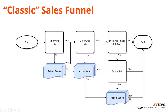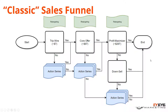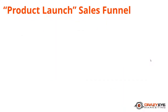If they buy the tripwire, we present our core offer at $97. If they don't buy it, another action series tries to sell that core offer. If they buy it, we show them our profit maximizer; if not, we present a downsell. If they don't buy the downsell, we place them in an action series for the profit maximizer. We use marketing automation to pull people through the funnel and sprinkle in retargeting to ensure our leads and customers are seeing our messages.